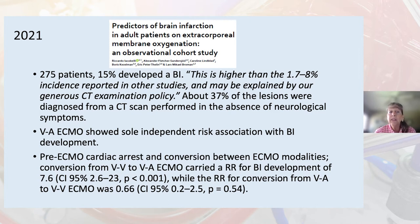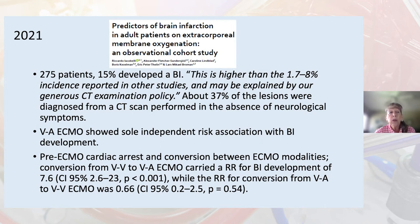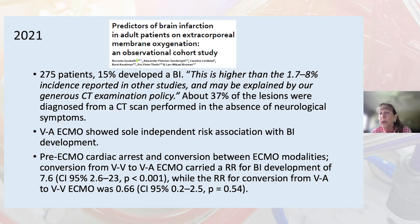This paper also compared peripheral VA ECMO versus central VA cannulation, with 275 patients, 15 of whom developed a brain injury. This is higher than the 1.7 to 8% incidence reported in other studies, which may be explained by their generous CT examination policy — 37% of lesions were diagnosed from CT scans performed in the absence of neurologic symptoms. VA ECMO showed sole independent risk association with brain injury. Conversion from VV to VA carried a relative risk of 7.6, while conversion from VA to VV was 0.66.